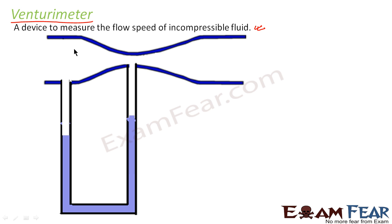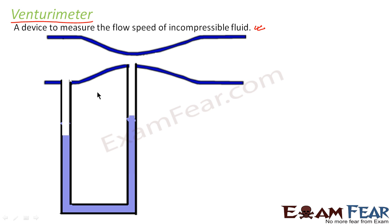The Venturimeter consists of a tube of broad diameter with a larger cross-sectional area, and a small constriction at the middle. It is attached to a U-tube manometer — a device used to measure gauge pressure, that is, the difference in pressure between the atmosphere and the system.